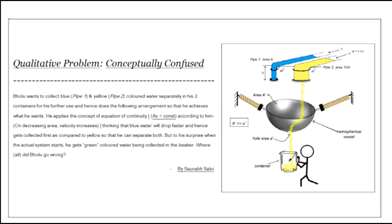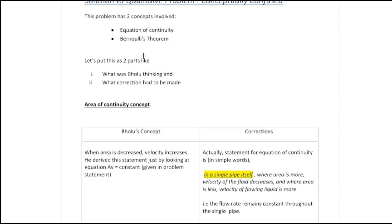Now let's proceed. To his surprise, when the actual system starts, he gets green colored water being collected in the beaker. So where did Bholu go wrong? This is what the question is asking. Let's proceed to the solution.